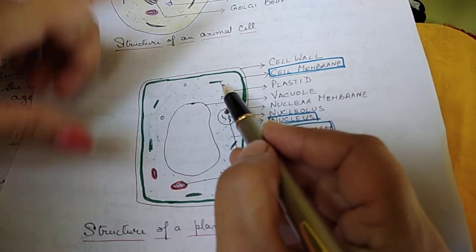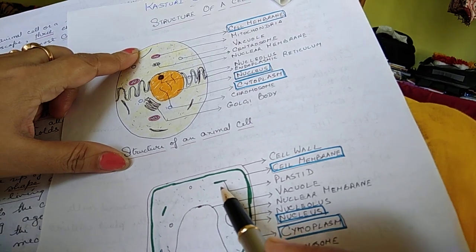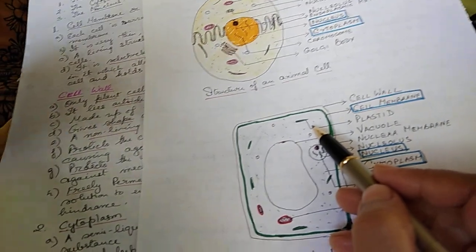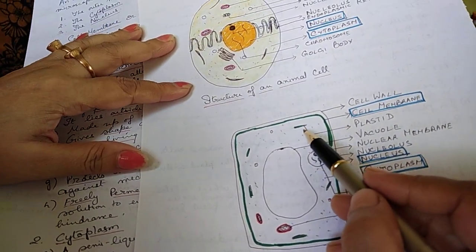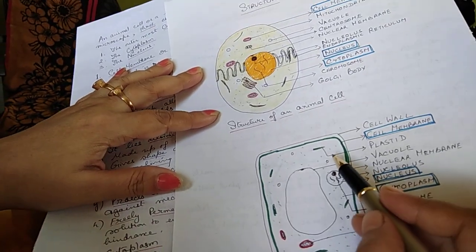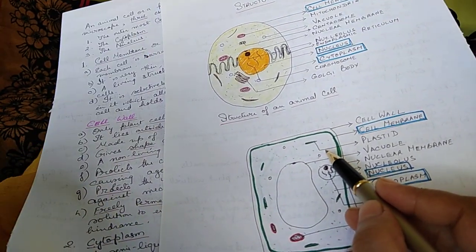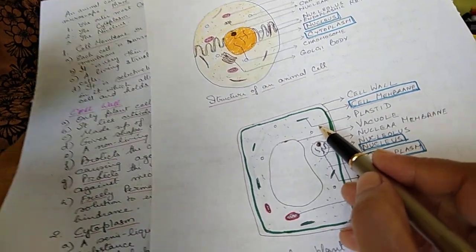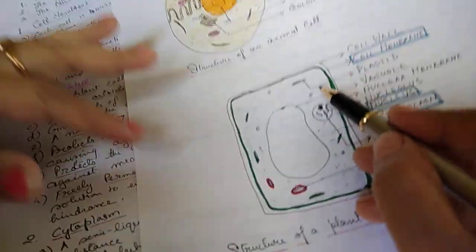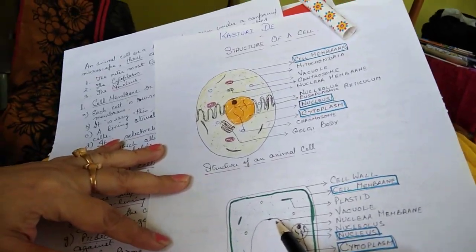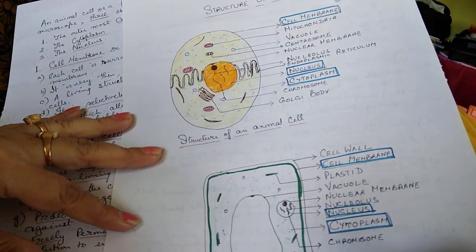Another basic difference is the plastids present in the plant cell but not present in the animal cell. These plastids are certain coloring substances present in the plant cell. They contain the chloroplast which perform the basic function. These are green in color and so they can manufacture the food.